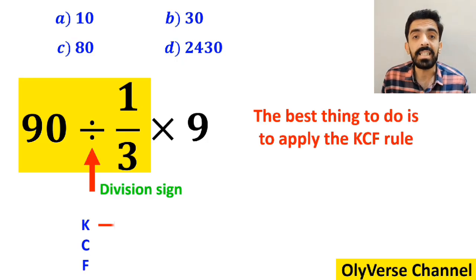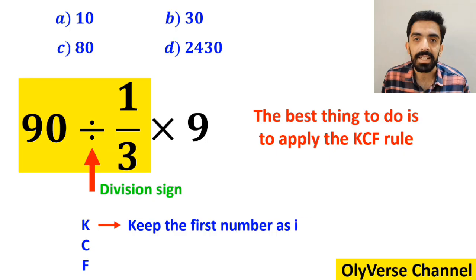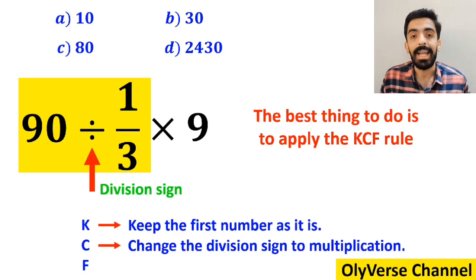In this rule, K stands for keep the first number as it is, C stands for change the division sign to multiplication, and F stands for flip the second fraction.